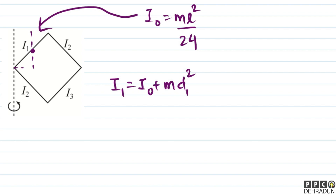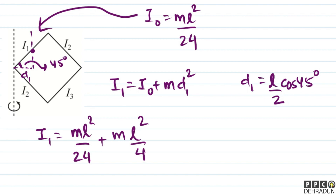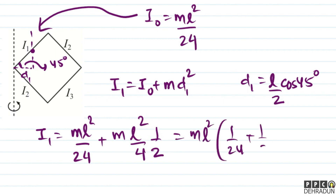यहाँ से इस axis तक की length को D₁ कह रहा हूँ। चूंकि यह angle 45 degree है, D₁ = L/2 × cos45°। तो I₁ = ML²/24 + M × (L²/4) × (1/2), जो कि ML²/24 + ML²/8 = ML²(1/24 + 1/8) हो जाएगा।